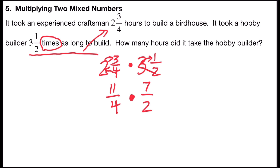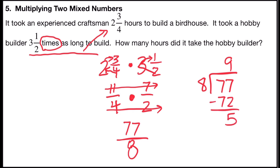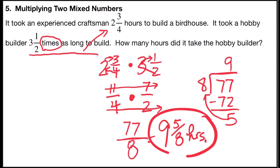Now we have two fractions. Multiply across the top: eleven times seven is seventy-seven. Multiply across the bottom: four times two is eight. Change seventy-seven over eight back to a mixed number: eight goes into seventy-seven nine times (nine times eight is seventy-two), with five remaining. So seventy-seven over eight equals nine and five-eighths hours for the hobby builder to build the birdhouse.